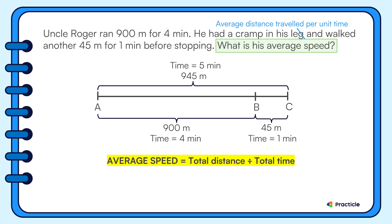Now comes the magic moment. Let's divide 945 by 5 and see what we have. 945 divided by 5 is 189. Uncle Roger's average speed is 189 meters per minute.